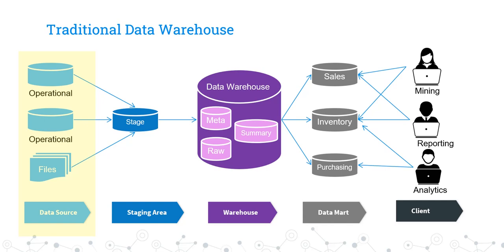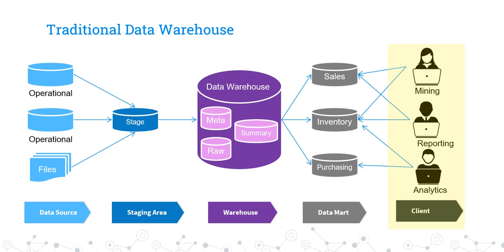ETL — that is, Extract, Transform, and Load — is implemented to pull data from the source system and push it to the staging layer. After performing cleansing and standardization, the data is pulled from the staging layer and pushed to the data warehouse. Along with raw data, metadata and summaries are also stored in the data warehouse. Finally, this data is published to the data mart, which may be used for sales, inventory, or purchasing. On top of this, the client layer is present where business users and analysts perform in-depth data analysis, prepare reports, and perform data mining.